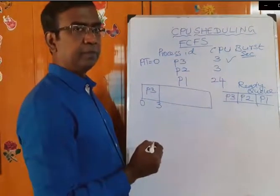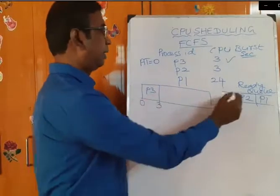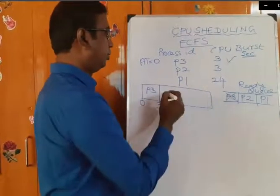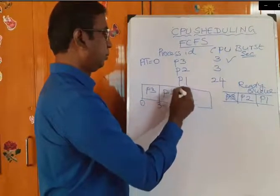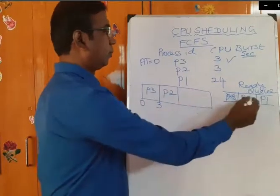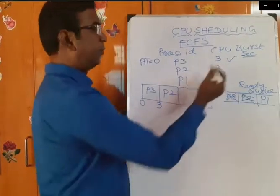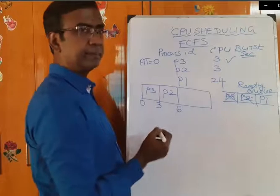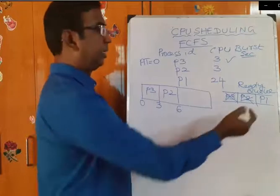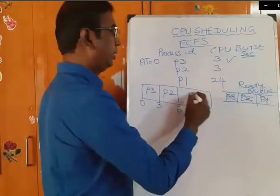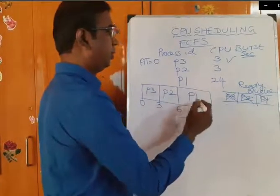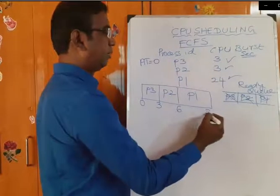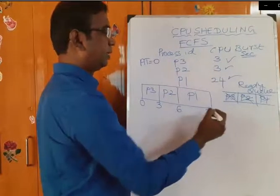Next, P2 will enter the CPU. P3 is completed, P2 is entering the CPU. P2 will execute for 3 seconds, so 3 plus 3 equals 6 seconds. Then P1 will enter into the CPU. P1 will execute for 24 seconds, so it will complete at 30 seconds.